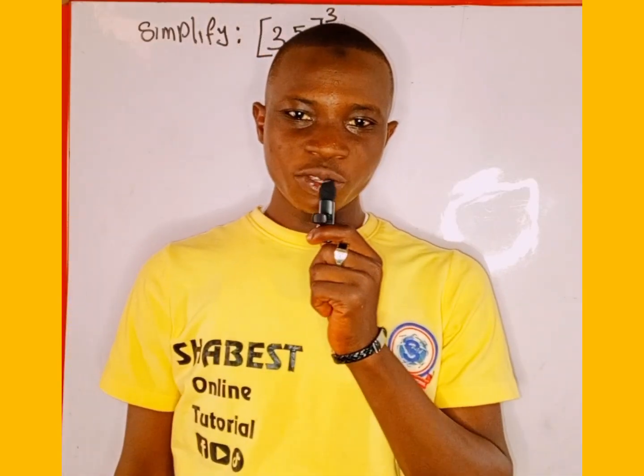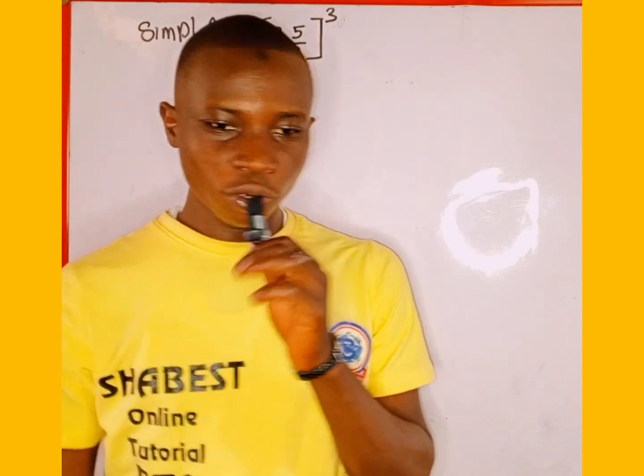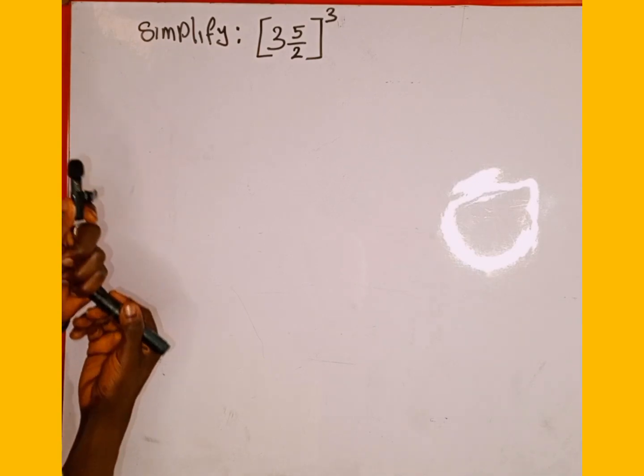Welcome back to Shabbat's online tutorial. In today's tutorial we are going to learn how to simplify this power expression on the board. So we are given 3 and 5 over 2 all to the power of 3 and we are asked to simplify.